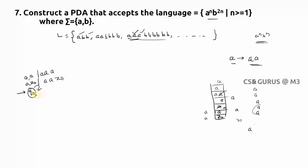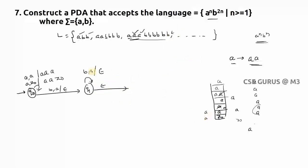After processing all a's, when you get b, the top of the stack is a, so you simply pop one a: transition b, a / ε. For six b's, six a's are popped out one by one. Finally you reach epsilon with Z₀ remaining, then move to q2 which is the final/accepting state.